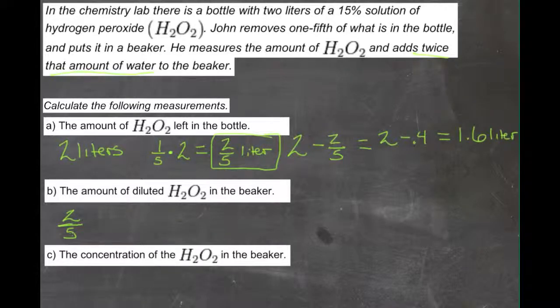So we have two-fifths of a liter of the solution, plus four-fifths of a liter of water. That gives us six-fifths of solution in the beaker. Six-fifths of a liter would be the same as twelve-tenths, which would be 1.2 liters.